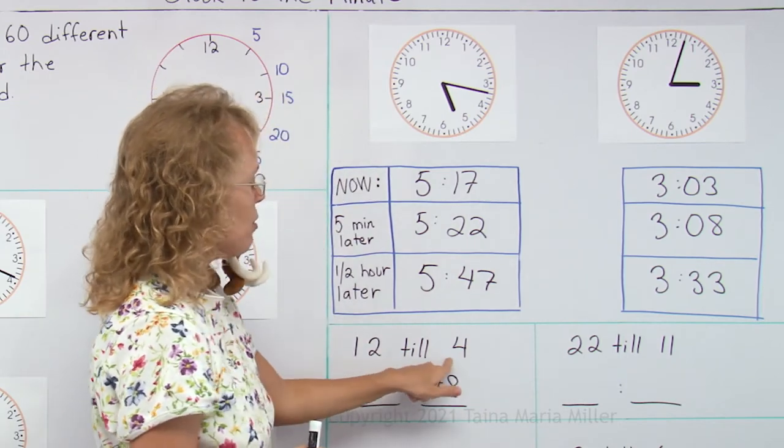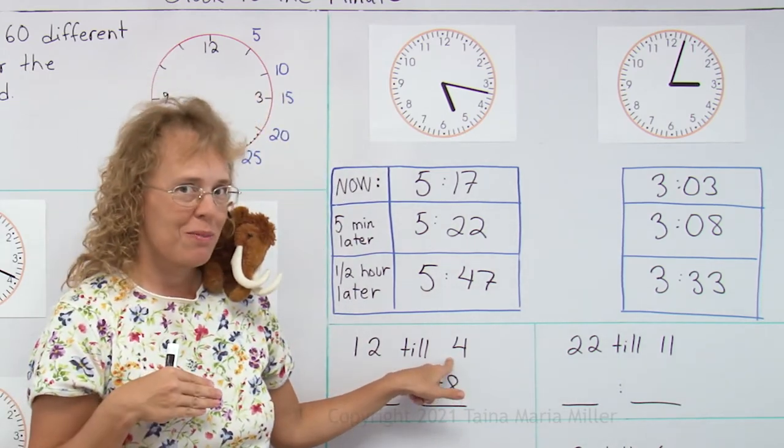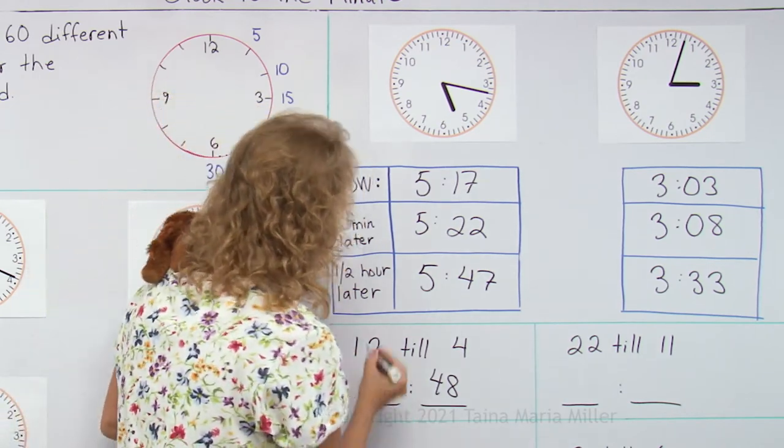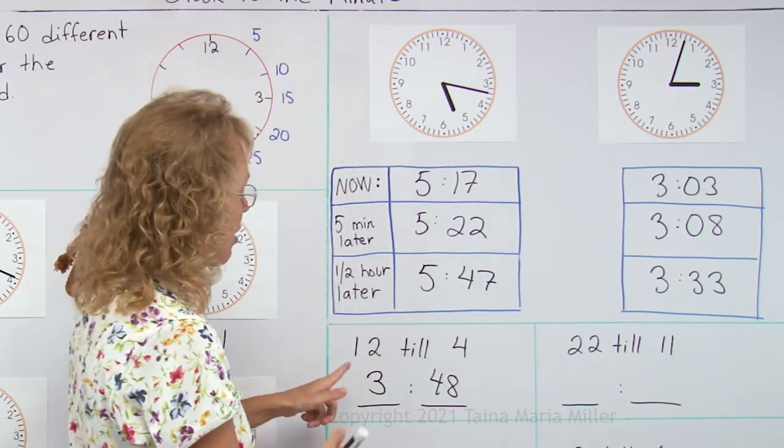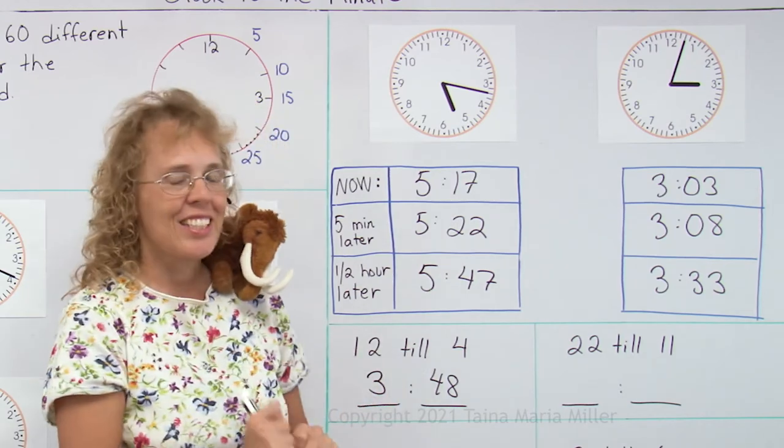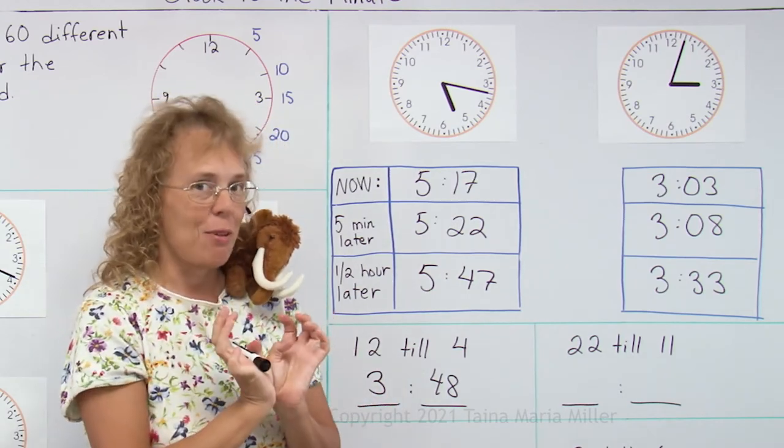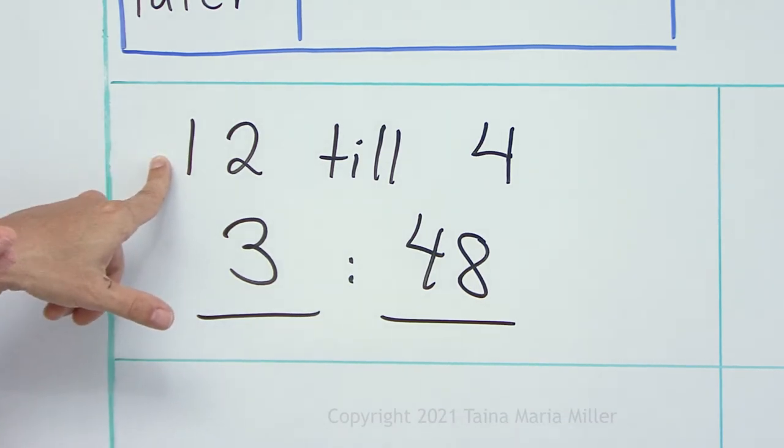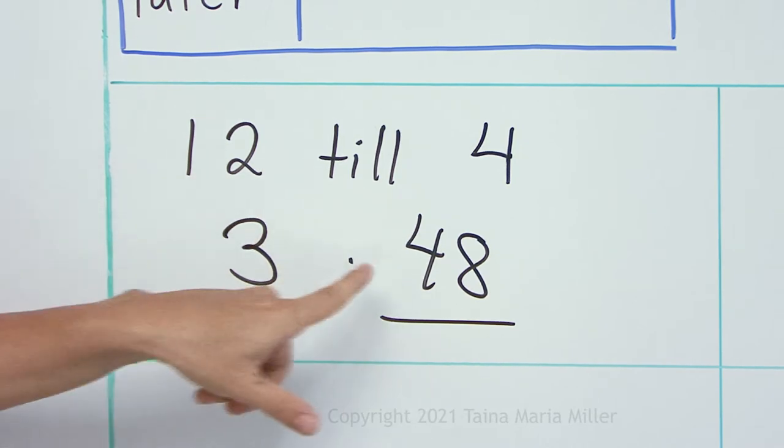And 12 till 4, it's not yet 4 o'clock. So the hours are 3. And the other way you can figure this out, this 12 and 48, is that there's 60 minutes in one hour. So if it is 12 minutes lacking from 4 o'clock, you can subtract, 60 minus 12 is 48 minutes.